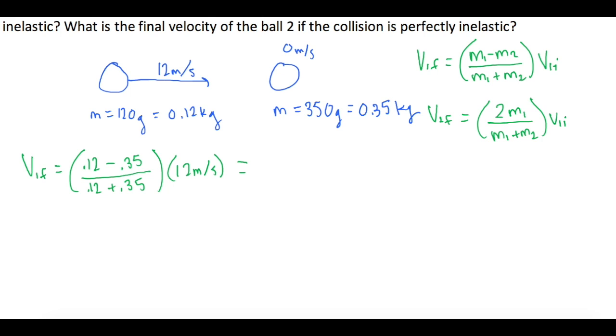When we get that, we get a final speed of ball 1 which is negative 5.872 meters per second, or rounded for Mastering Physics, negative 5.9 meters per second.